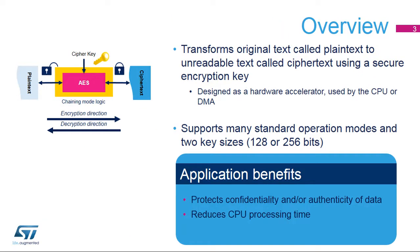The AES algorithm is a symmetric block cipher used to encrypt and decrypt information using a secret cryptographic key that is 128 or 256 bits long. Encryption converts data to an unintelligible format called ciphertext, while decrypting converts the ciphertext back to its original format called plaintext. The AES peripheral is a NIST FIPS 197-compliant implementation of the AES algorithm.